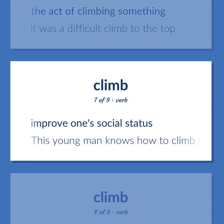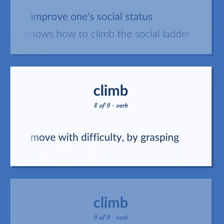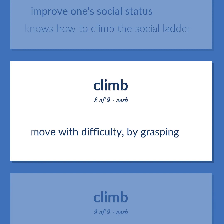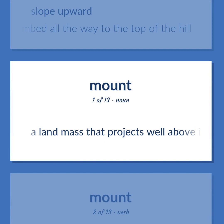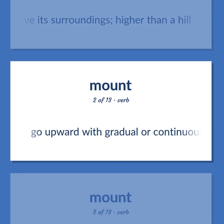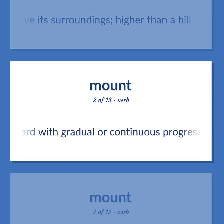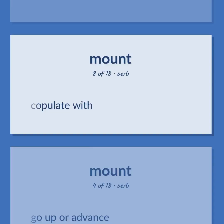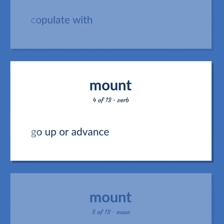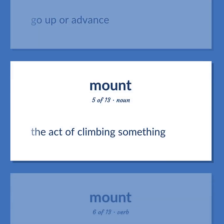Improve one's social status — this young man knows how to climb the social ladder. Move with difficulty, by grasping. Slope upward — the path climbed all the way to the top of the hill. A landmass that projects well above its surroundings; higher than a hill. Go upward with gradual or continuous progress. Go up or advance. The act of climbing something.